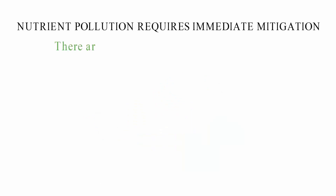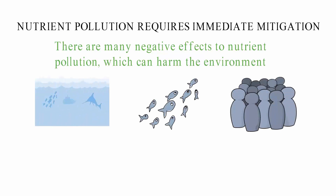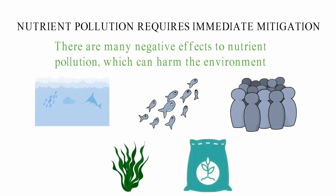Proper sewage management: People should make sure that their sewage is properly cleaned before it's returned to the environment. Nutrient pollution requires immediate mitigation. There are many negative effects to nutrient pollution, which can harm the environment, water bodies, aquatic life, and people. Harmful algal blooms (HABs) release toxins that can have a big impact on your health. We can keep waterways clean by cutting down on nutrient pollution — the best way is to cut back on the use of phosphorus and nitrogen-based fertilizers.